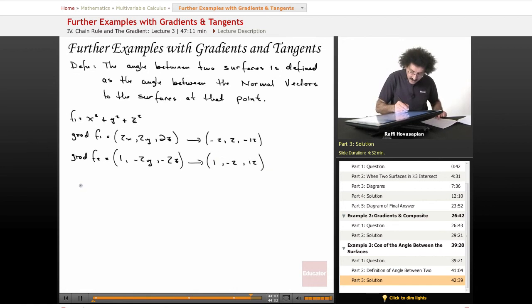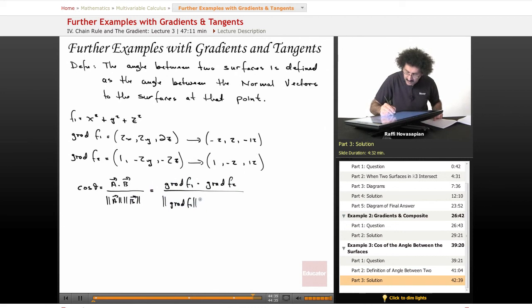Now we know that the cosine of theta happens to be, remember, the cosine between two vectors a and b is the dot product of those vectors divided by the product of the norms of those vectors. So what we have is the gradient of f₁ dotted with the gradient of f₂ divided by the norm of the gradient of f₁ times the norm of the gradient of f₂. Wow, look at all that crazy notation.